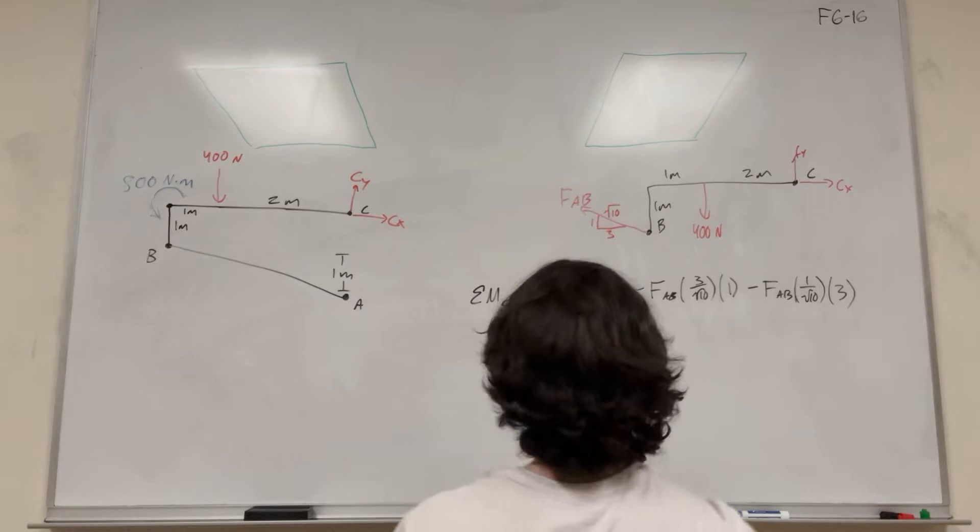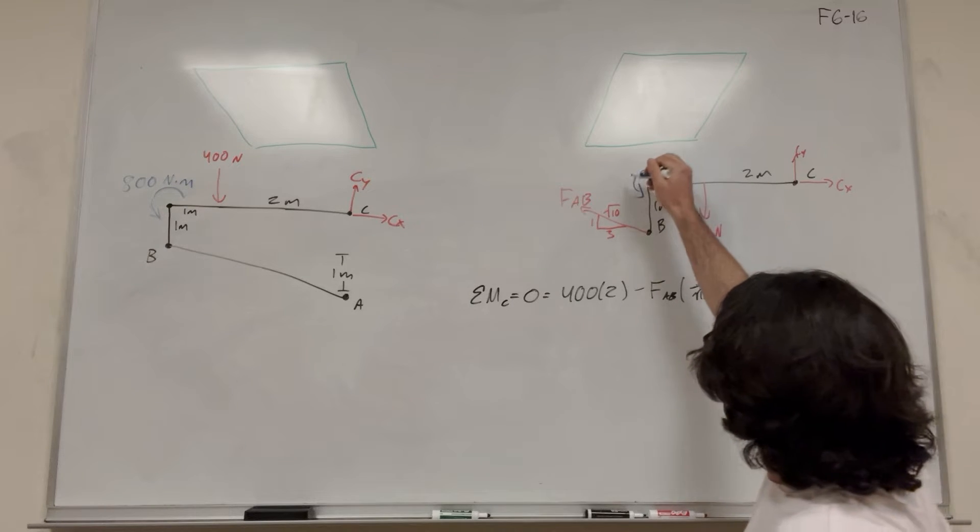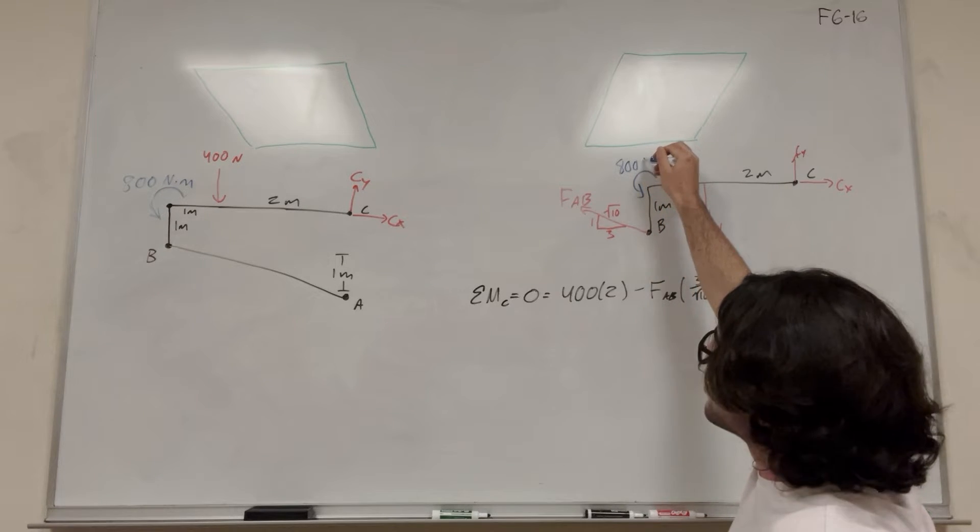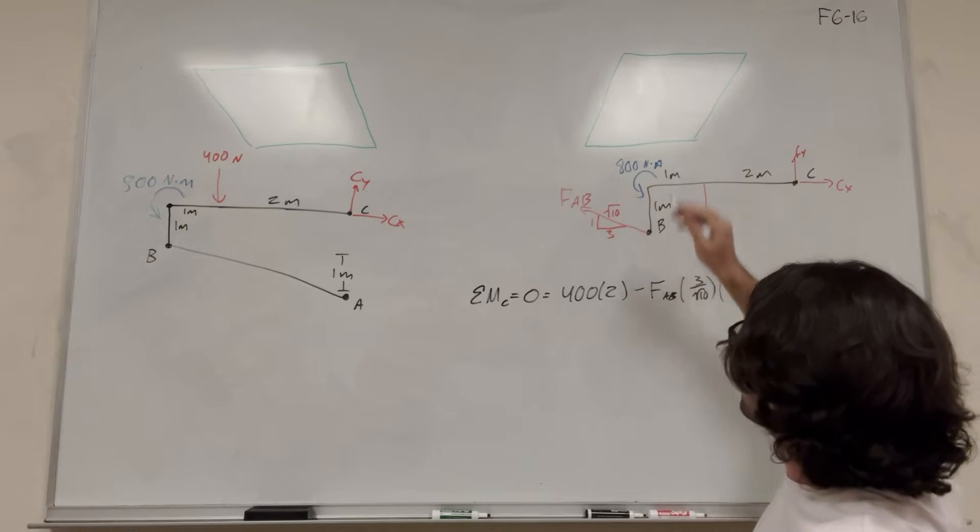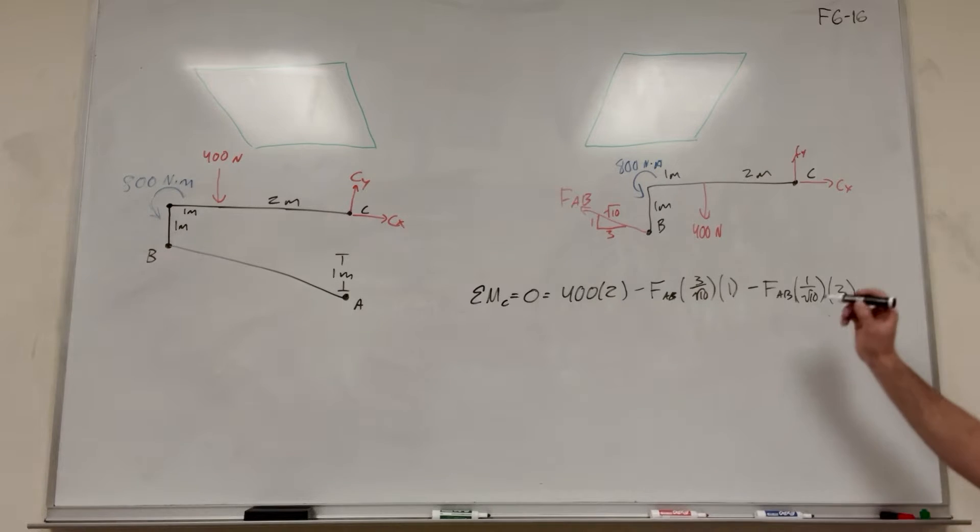And then also we have this moment that I totally forgot to bring over. This is an 800 newton meter force. So if we have this 800 newton meters, we have to make sure to add that. It's going counterclockwise, so that's going to be added as well. So it's plus 800. There we go. Now we have it all.